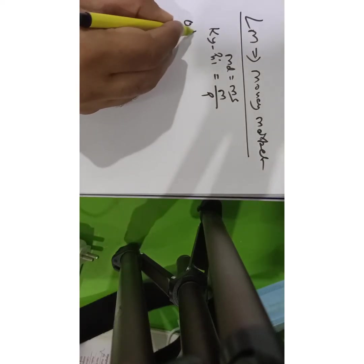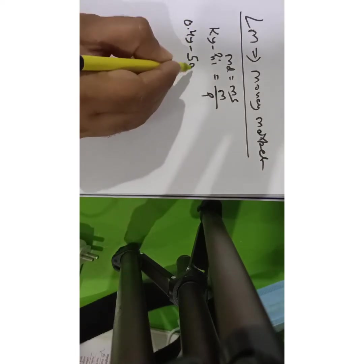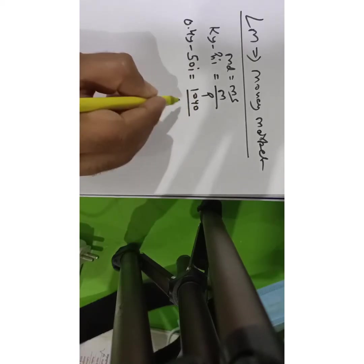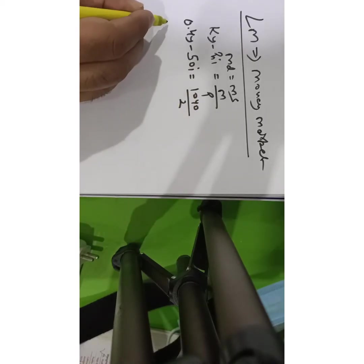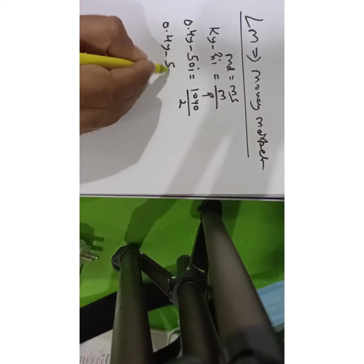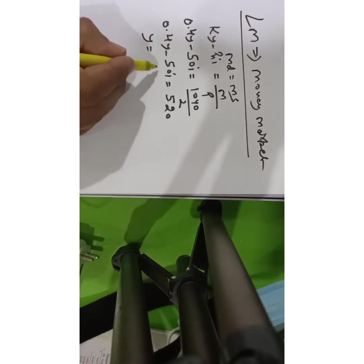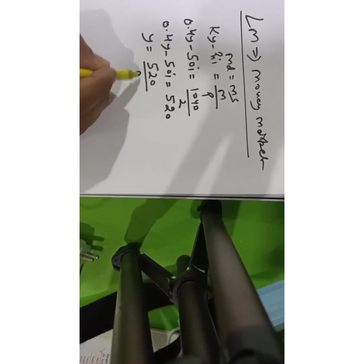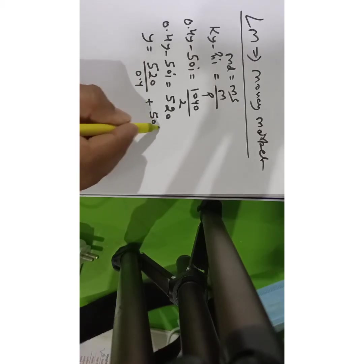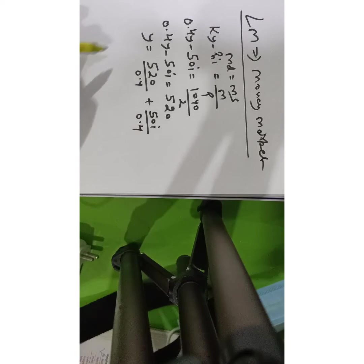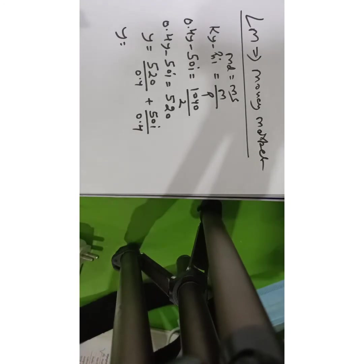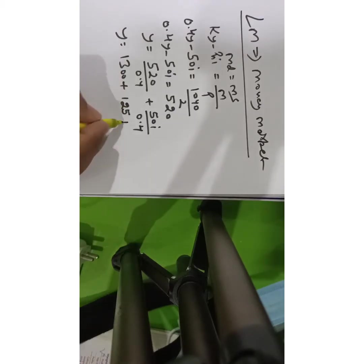Using the information given: MD is 0.4Y minus 50i, and M/P is 1040 divided by 2, which equals 520. Solving further and expressing in terms of Y: Y equals 520 divided by 0.4 plus 50i divided by 0.4.